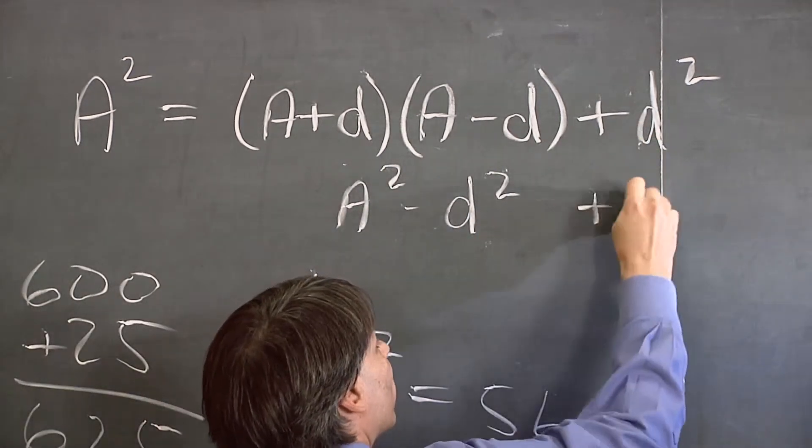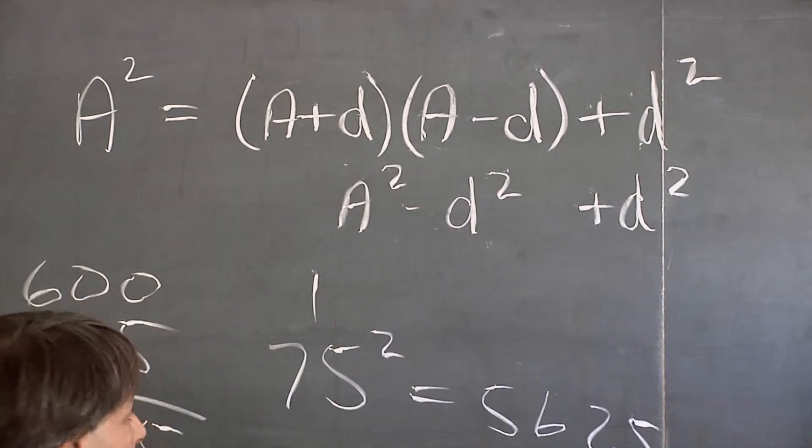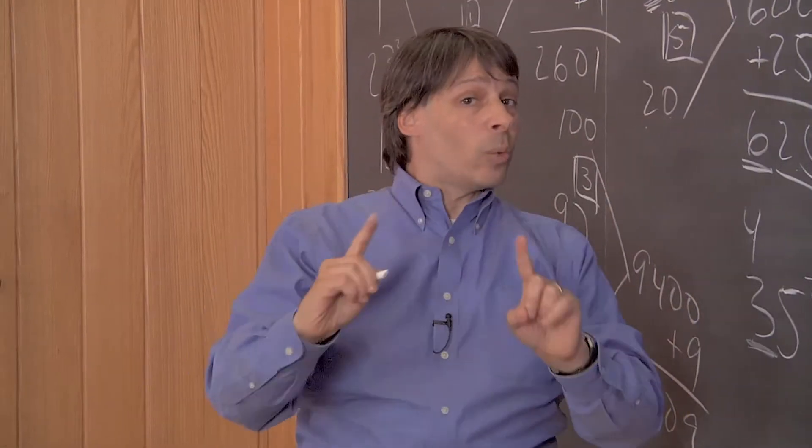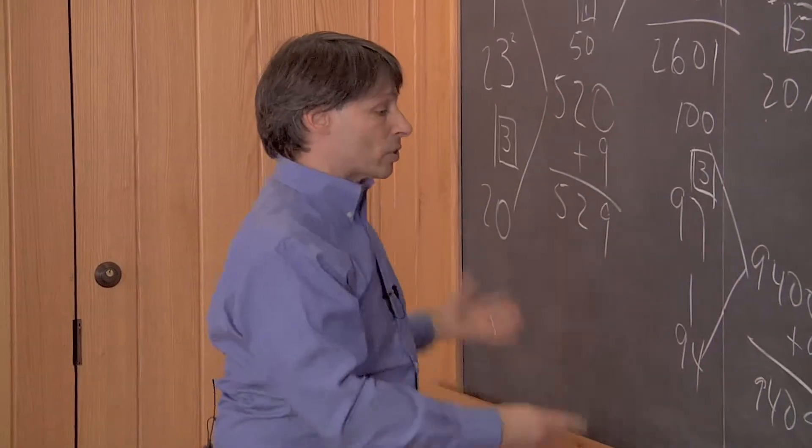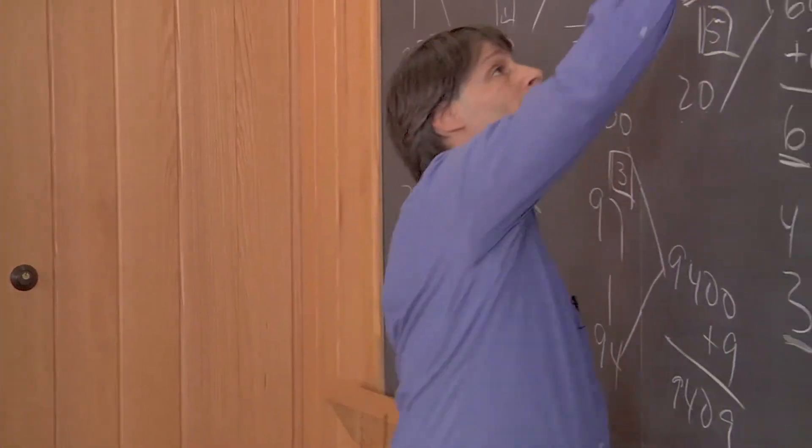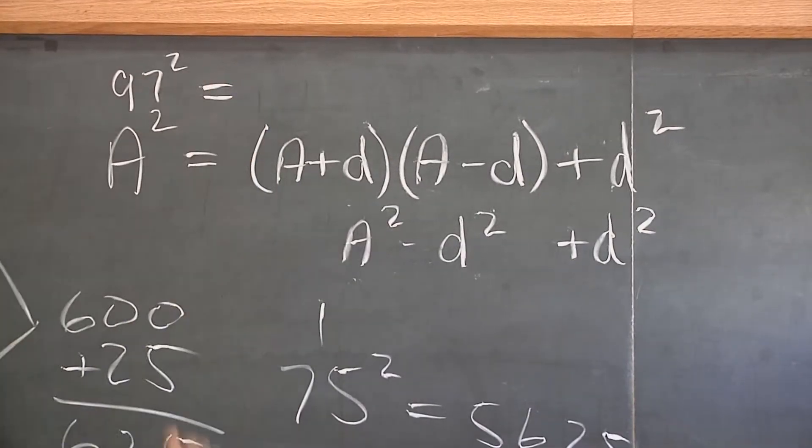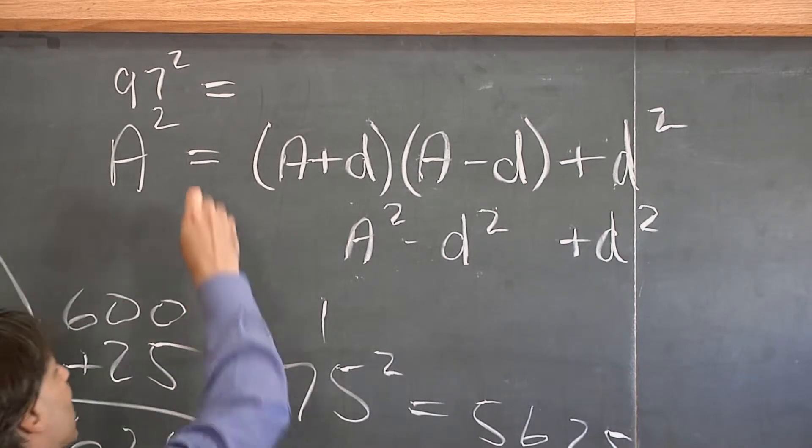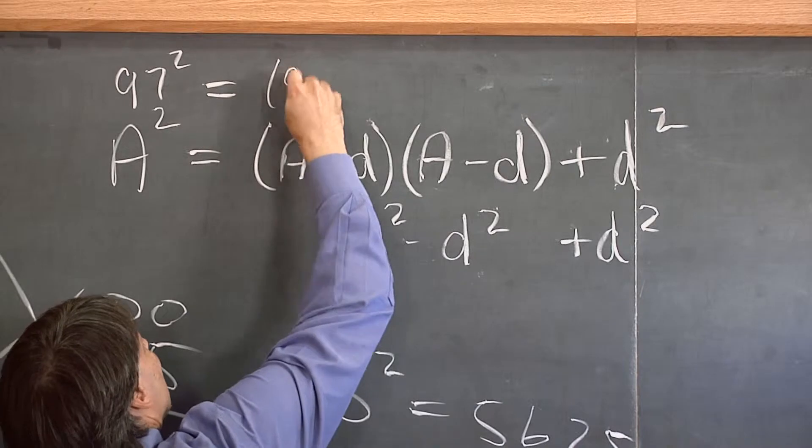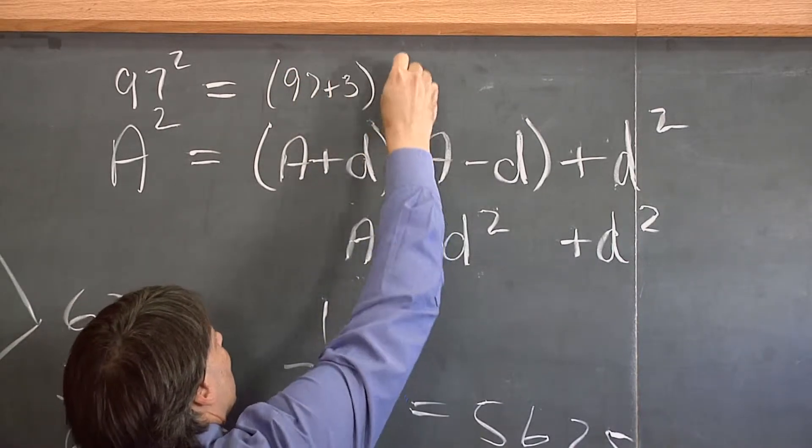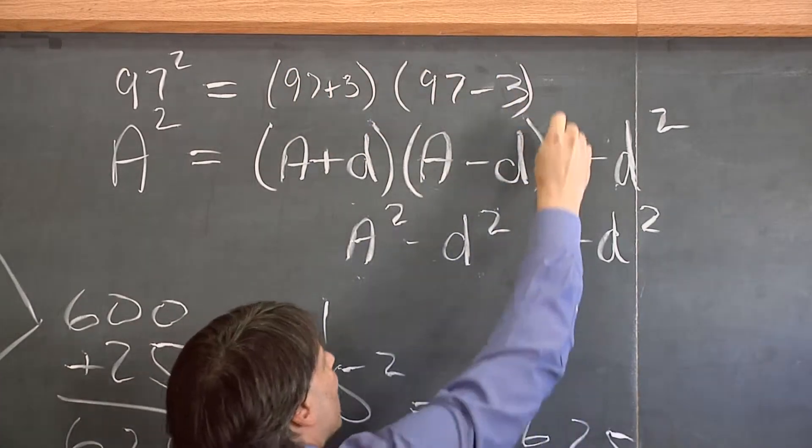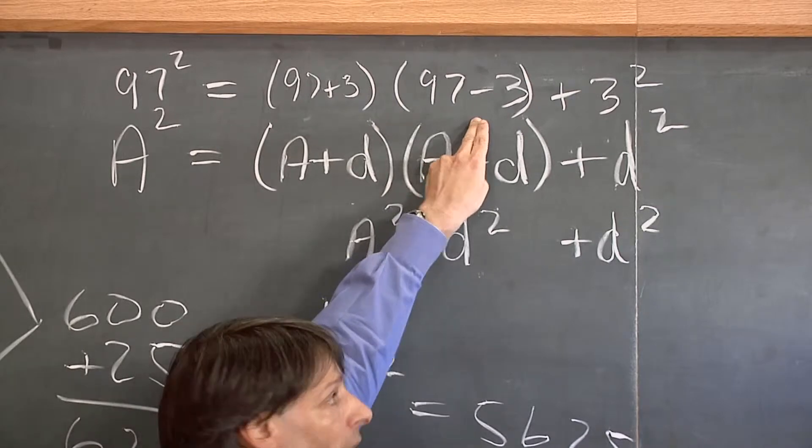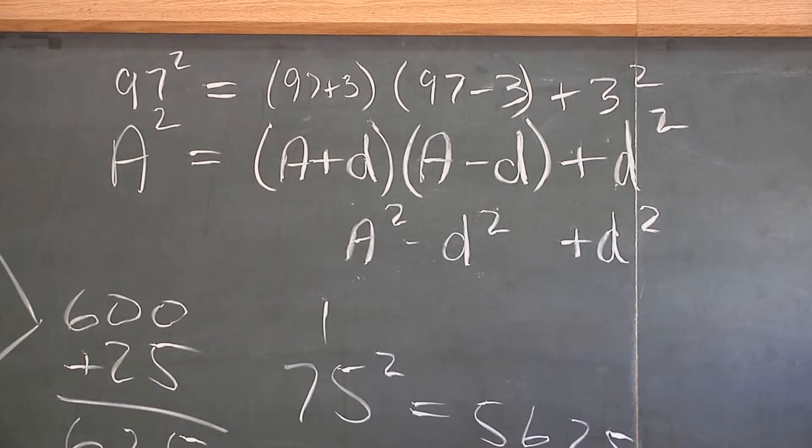First of all, let me show you that this is a true equation. If you take A plus D times A minus D, if you've had an algebra course, you know that's equal to A squared minus D squared. When you add the D squared, the D's go away, they disappear, and you're just left with A squared, which is what we have here. Now, this is exactly what we were doing when we were squaring these numbers. Let's say, for instance, when we squared 97, what was our D? What was the distance we traveled? We traveled 3. And this formula says that 97 squared is equal to 97 plus 3 times 97 minus 3 plus 3 squared. That is, it's 100 times 94 plus 9. And that's exactly what we did here.